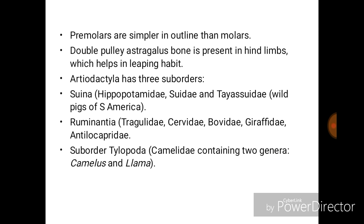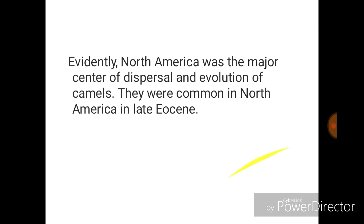Artiodactyla has three sub-orders: Suina, Ruminantia, and Tylopoda. The sub-order Tylopoda has family Camelidae, which has two genera: Camelus and Llama.